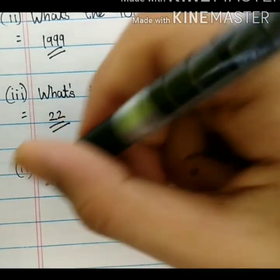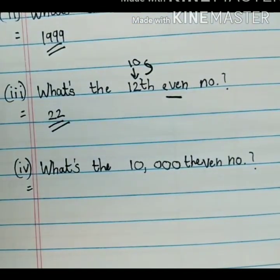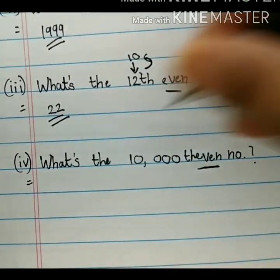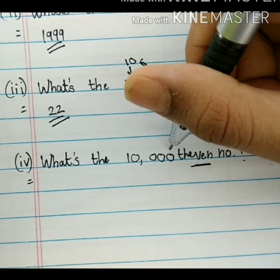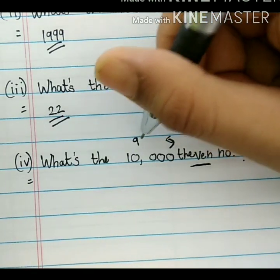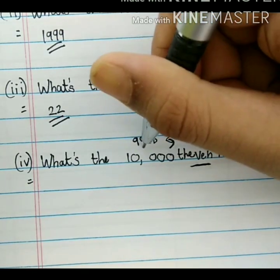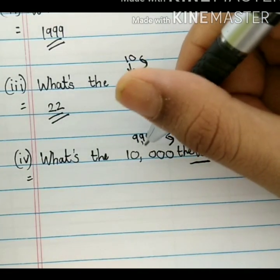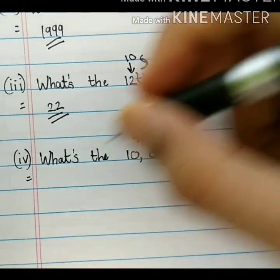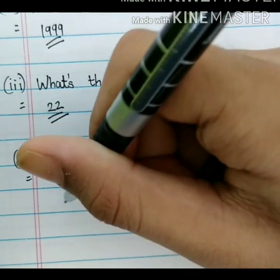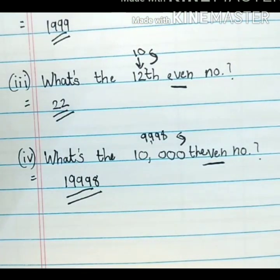The fourth question says: what is the 10,000th even number? Just as we did for the even number question, we subtract 2 from 10,000, which gives us 9,998. Then we add 9,998 and 10,000, which directly gives us the answer: 19,998.